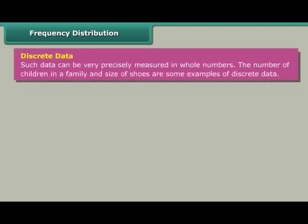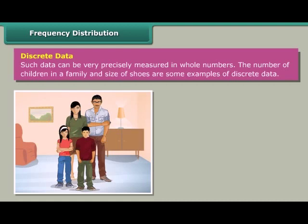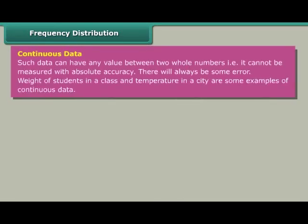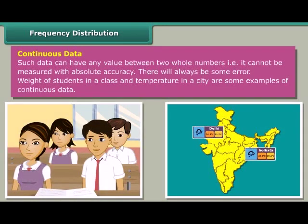Discrete data can be very precisely measured in whole numbers. The number of children in a family and shoe size are some examples of discrete data. Continuous data can have any value between two whole numbers — that is, it can be measured with absolute accuracy, though there will always be some error. Weight of students in a class and temperature in a city are examples of continuous data.